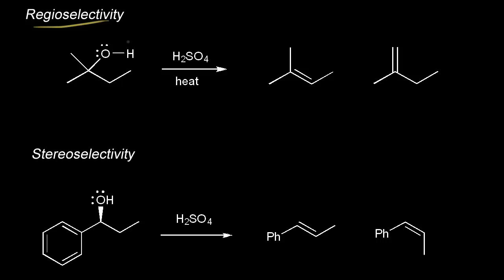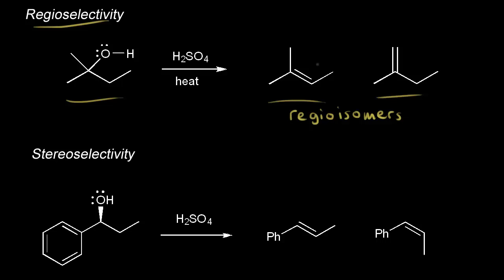We'll start with regioselectivity. The reaction shown here is a regioselective reaction. This alcohol gets dehydrated to form two products: the alkene on the left and the alkene on the right. These two alkenes are regioisomers — they're isomers of each other, but they differ in terms of the region or the location of the double bond. The isomer on the left has a double bond here, and the isomer on the right has the double bond here.